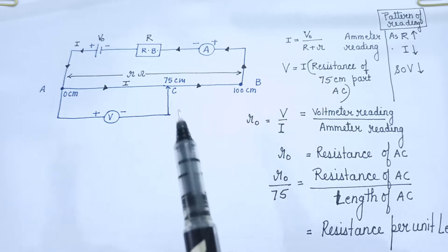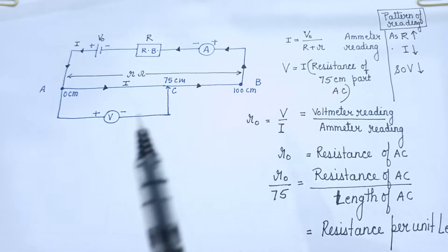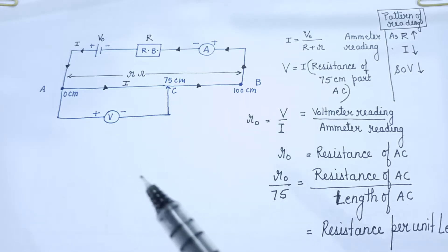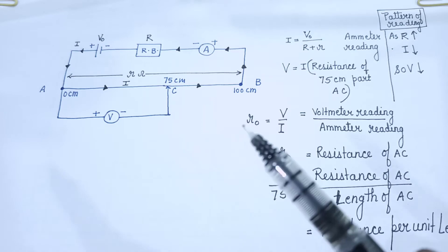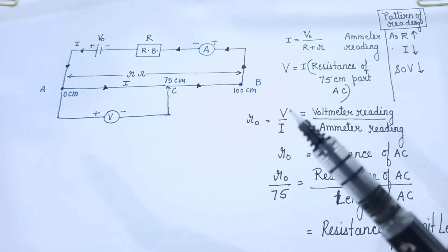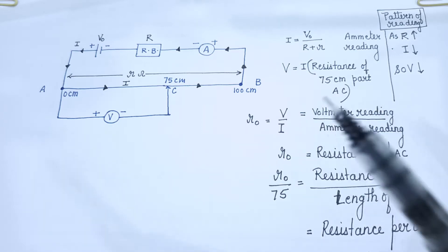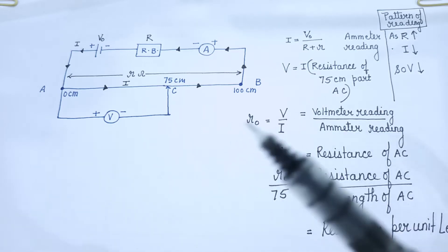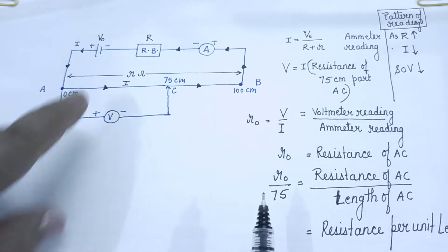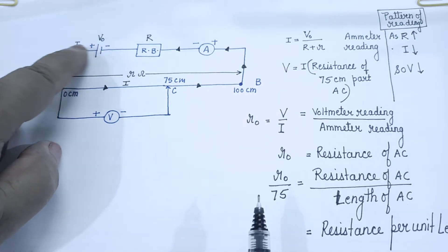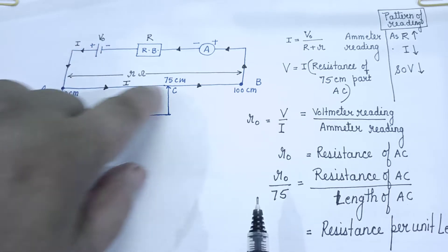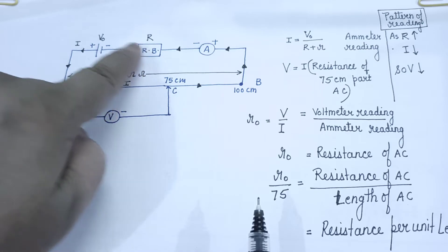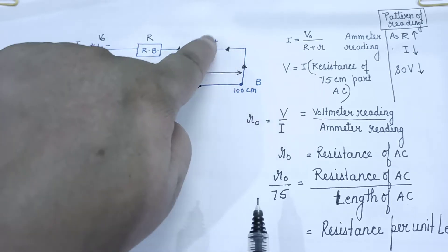It is time to analyze the circuit and find the pattern which we should see in the observation, because that pattern carries one mark. Just look at the current in the circuit — the current flows through this loop.